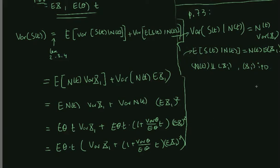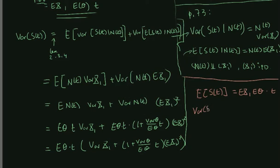Now let's recall what the exercise asks. We need to show that the premium according to the variance principle divided by the premium according to the expected value principle tends to infinity as t goes to infinity. Under the variance principle, the premium is the expected value of S plus a loading constant alpha times the variance of S. Under the expected value principle, we load the expected value of S by a factor rho. The first term simplifies to 1 over 1 plus rho, and the second term is alpha divided by 1 plus rho, independent of t, times variance of S divided by mean of S.